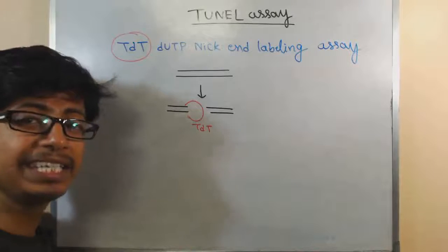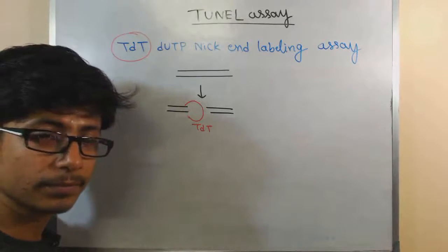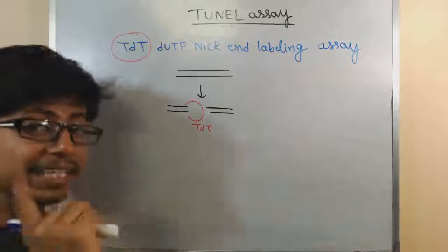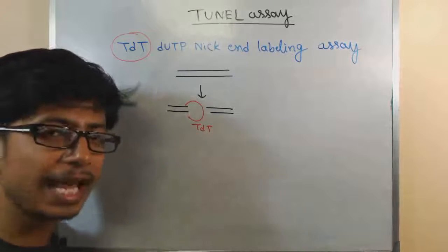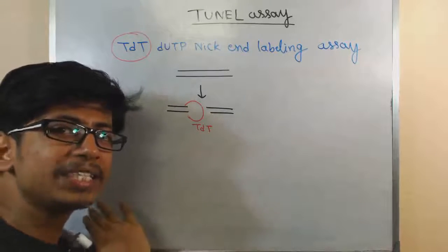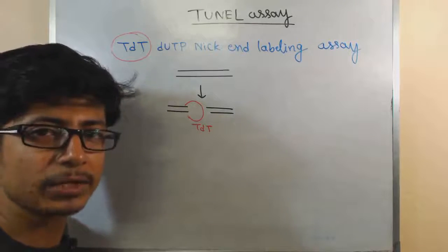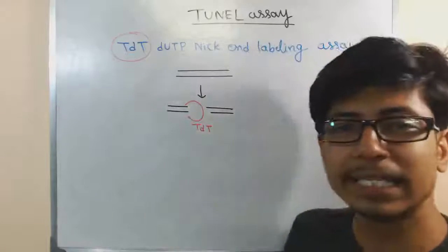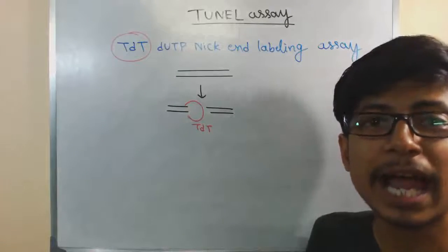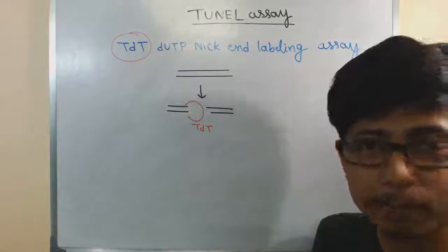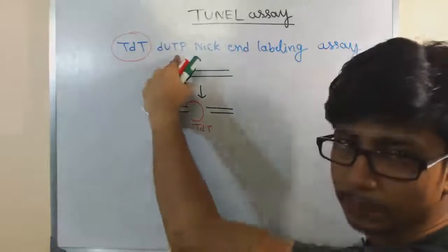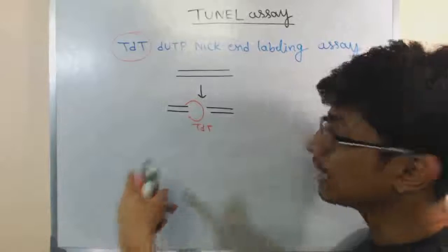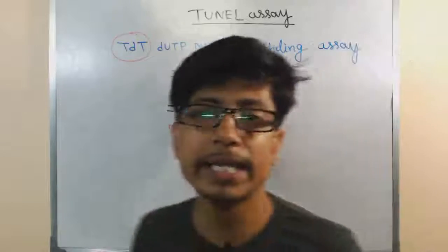Then it will start adding dUTP in those terminal regions of the DNA. So, what they will add dUTP. The interesting thing about TDT is that TDT does not require any template strand to add nucleotide sequence. That is why it is important. TDT is a template-independent nucleotide addition enzyme. It can add dUTP at the terminal part of the double-stranded blunt-ended DNA, but it will no longer require any template strand there.